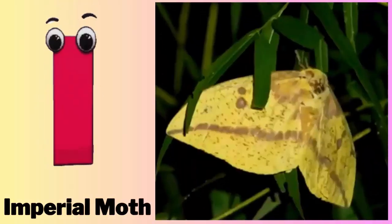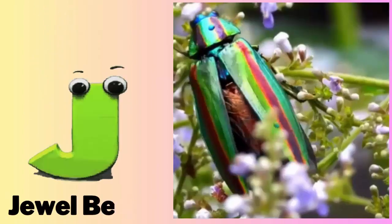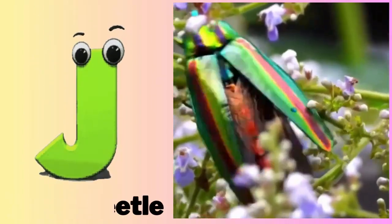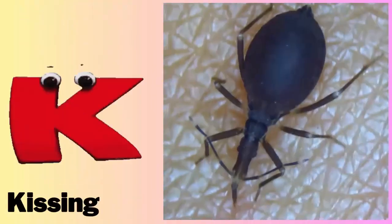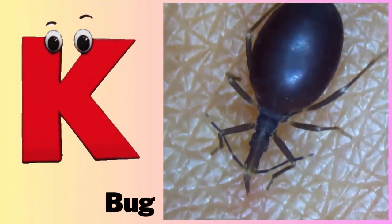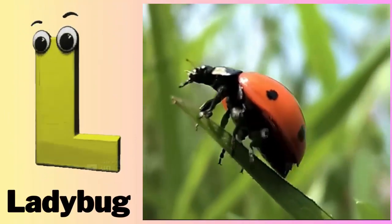I - I for Imperial Moth. J - J for Jewel Beetle. K - K for Kissing Bug. L - L for Ladybug.